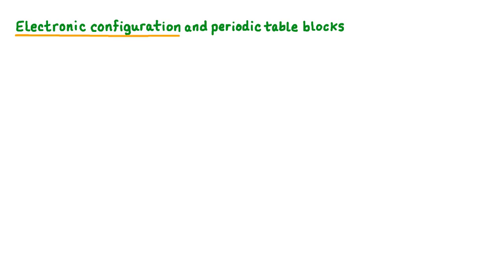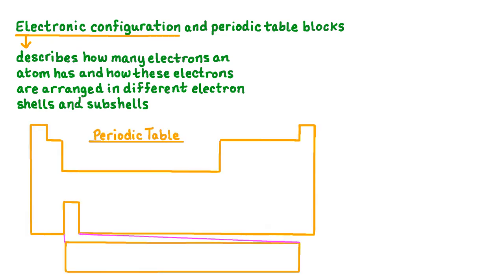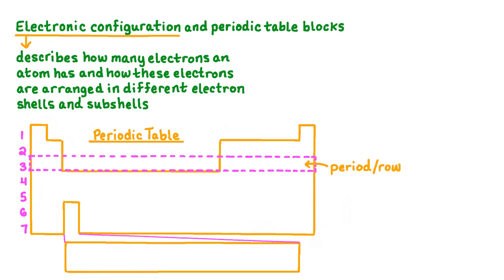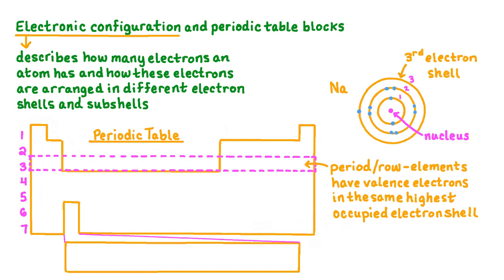The electronic configuration of an atom describes how many electrons an atom has and how these electrons are arranged in different electron shells and subshells. On the periodic table, a period or horizontal row contains elements which have valence electrons in the same highest occupied electron shell. For example, sodium and all of the elements in period 3 will have valence electrons in the third electron shell. However, the arrangement of electrons within electron shells is more complicated than what we've shown here.